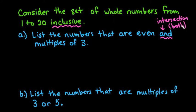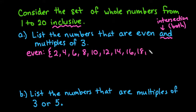When you're setting up to find the set that meets both conditions, you first want to start with looking at the numbers that are in each individual set. So let's start with even. For even, we have the numbers 2, 4, 6, 8, 10, 12, 14, 16, 18, and 20.